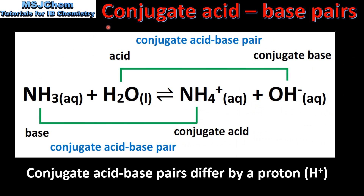Next we look at the conjugate acid-base pairs in this reaction. Ammonia is the base and its conjugate acid is the ammonium ion. Water is the acid and its conjugate base is the OH- ion. The NH3 and the NH4+ are a conjugate acid-base pair. The H2O and the OH- ion are also a conjugate acid-base pair. Conjugate acid-base pairs differ by a proton, a H+ ion.